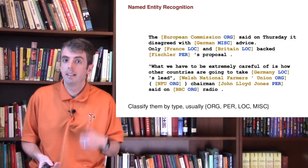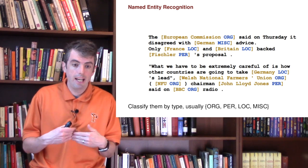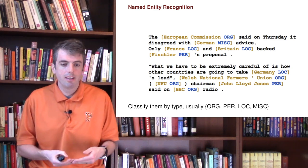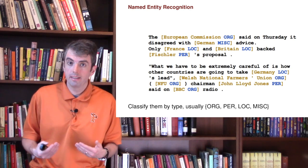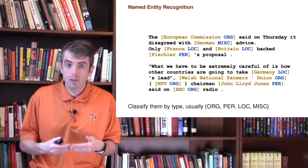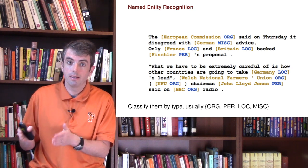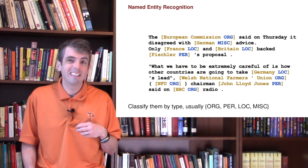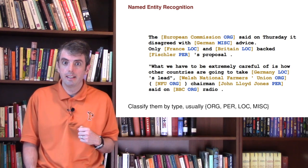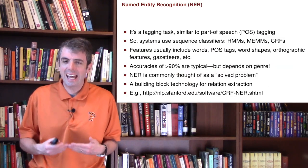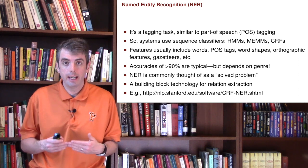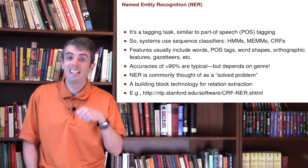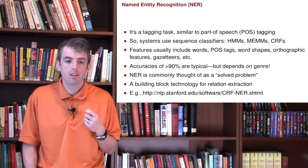Let's say that you have a piece of text like so. You need to identify that the European Commission is an organization, Britain is a location, and the Welsh National Farmers Union is an organization. Not only do you need to identify the exact spans of text — so European Commission is the second and third token in this piece of text — you also need to label it to say what kind of named entity it is. Named entity recognition is often considered a tagging task, where for every token in the piece of text you need to say what tag is associated with that token.